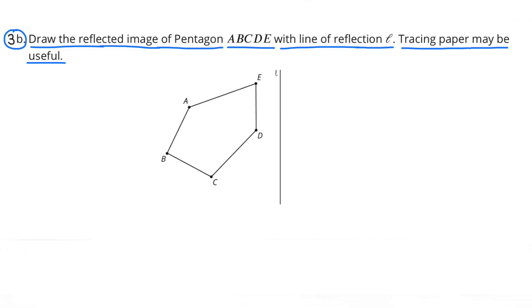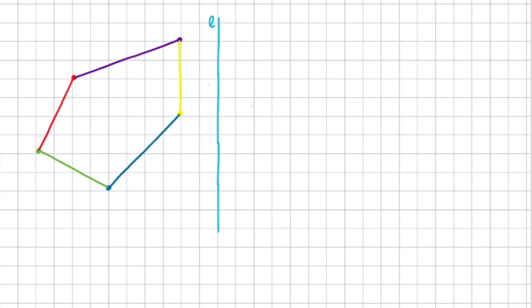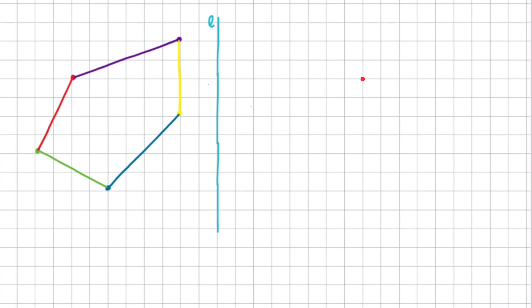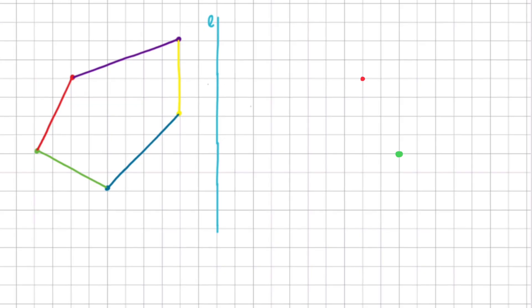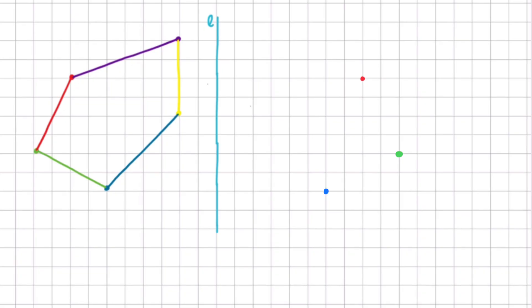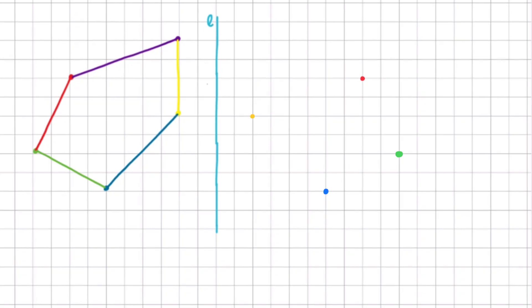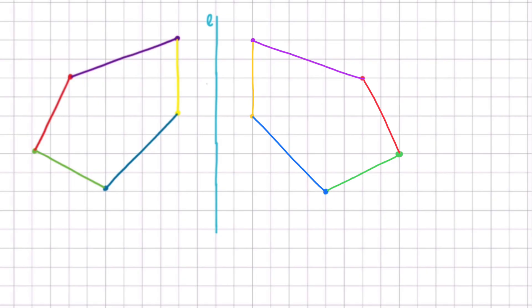3B. Draw the reflected image of the pentagon ABCDE with line of reflection L. Tracing paper may be useful. Since point A is eight units from the line to the left on the original figure, I'm going to put point A eight units to the right of the line for the reflection. I'll use that same strategy for finding the locations of the points for the reflection of the original figure. Now that we have all the points for the reflection, we can fill in the lines and you can see the reflection. The reflection is on the right, the original figure is on the left.